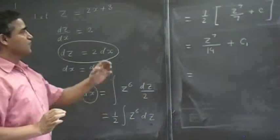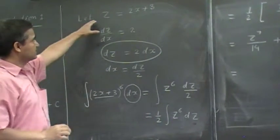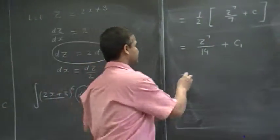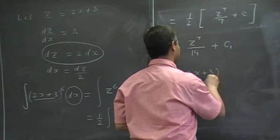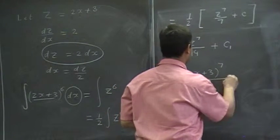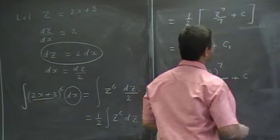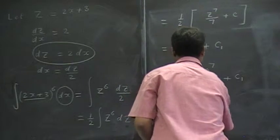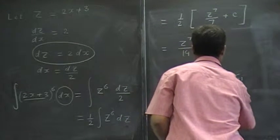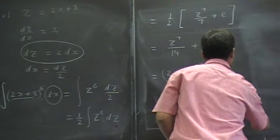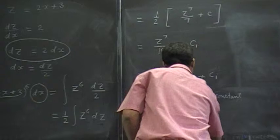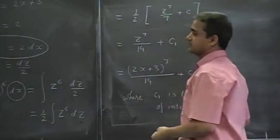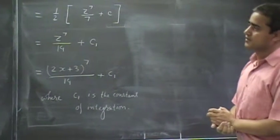z is something we introduced here to make the problem simpler. So, let's put back the value of z. z is (2x plus 3) to the 7 over 14 plus c1, where c1 is the constant of integration. Does that make sense?